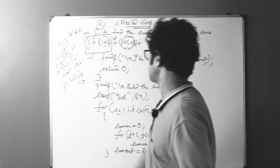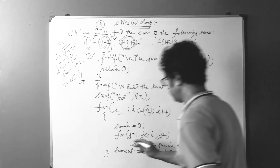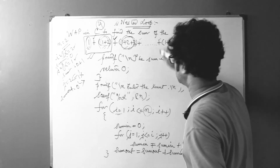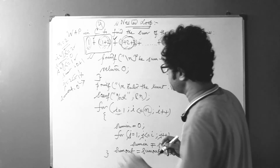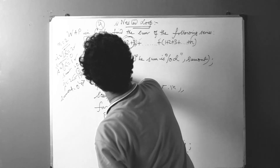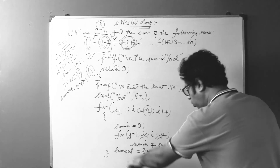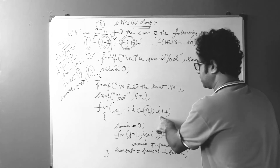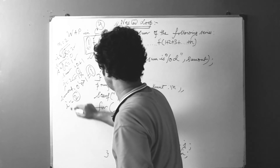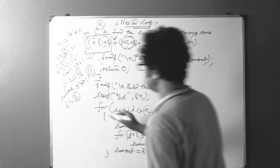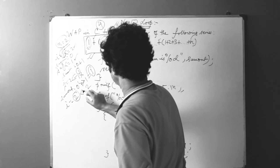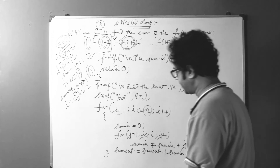Coming out of the j loop, we calculate: sum_out = 0 + sum_in = 0 + 1 = 1. Now i++ makes i = 2. We check: 2 is less than or equal to n = 2, so we enter the outer loop again.